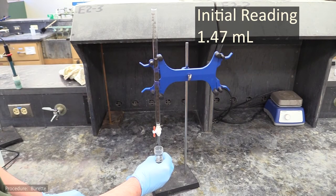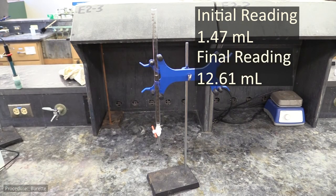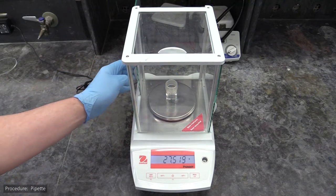You'll then dispense about 11 to 13 milliliters of water into your weighing bottle and take a final reading, again to the hundredths place. You can then calculate the volume dispensed by subtracting the initial reading from the final. Finally, re-weigh your weigh bottle with the water inside.